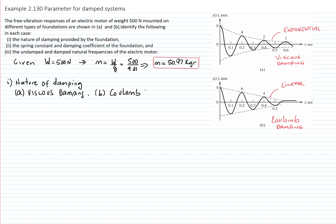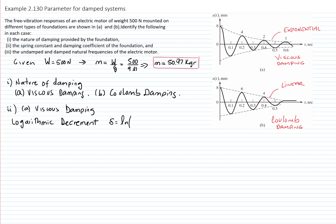Now let's calculate the spring constant and the damping coefficient of the foundation in each case. Starting with viscous damping, Case A, we use the concept of logarithmic decrement, which is defined as the logarithm of two consecutive amplitudes. Using the first two amplitudes from the curve — 8 and 4 — the logarithmic decrement is the logarithm of 8 over 4, which equals ln(2) = 0.6931.